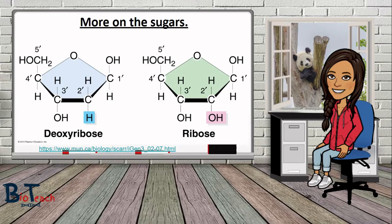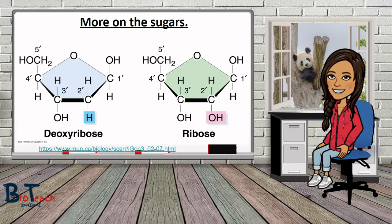The next part covers the slight difference between deoxyribose and ribose sugars. Deoxyribose is the sugar present in DNA — hence deoxyribonucleic acid — and ribose is the sugar in RNA — hence ribonucleic acid. The only structural difference is at the second carbon: in deoxyribose, carbon 2 has two hydrogens bonded to it, whereas in ribose, carbon 2 has one hydrogen and one hydroxyl group. You don't need to draw these molecules, but it's useful to know the difference.